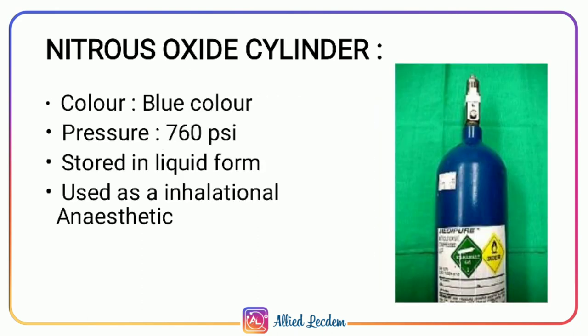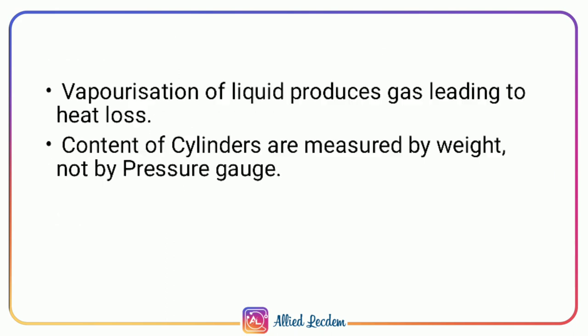The nitrous oxide cylinder is blue in color. The pressure at which nitrous oxide is loaded is 760 psi. It is stored in liquid form and is used as an inhalational agent. Vaporization of liquid nitrous oxide produces gas, leading to heat loss. Because the contents are in liquid form, they are measured by weight and not by the pressure indicated on the gauge.